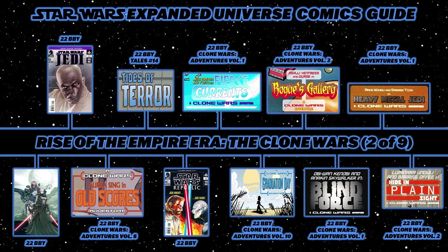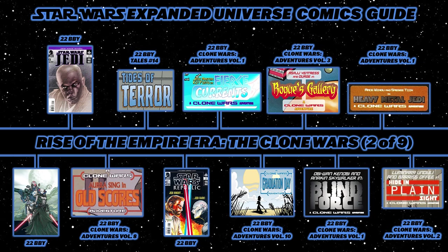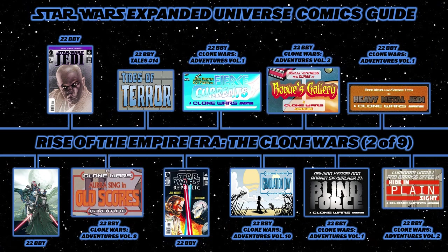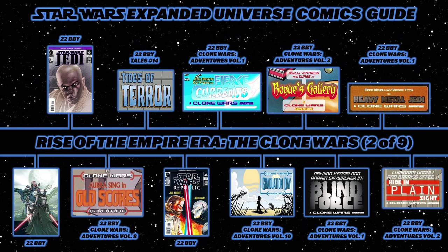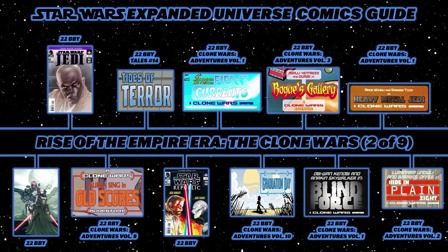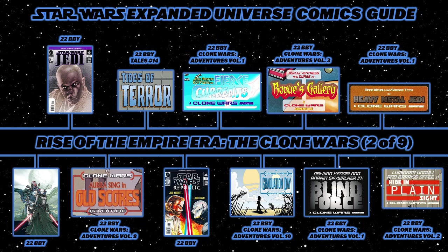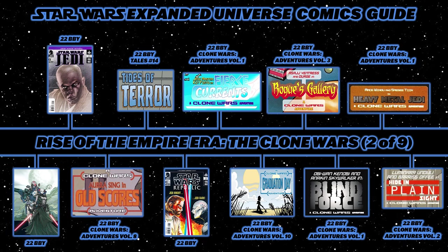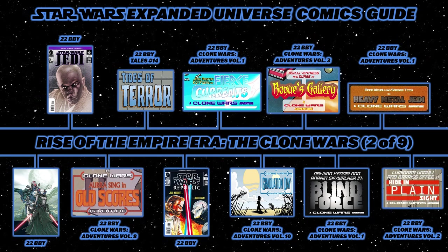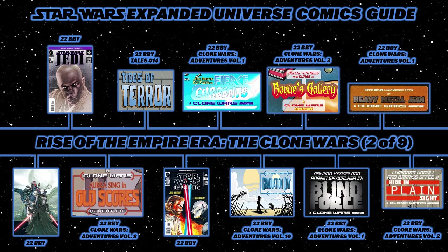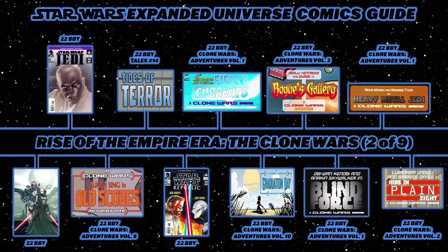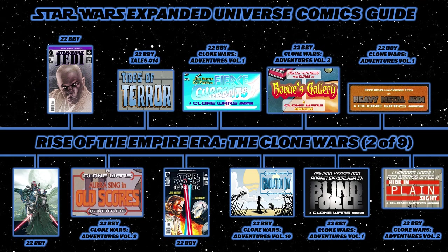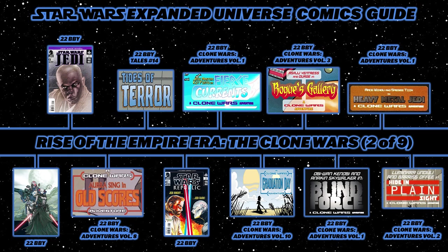They come into conflict with bounty hunter Durge and Sith apprentice Asajj Ventress. Next are the Jedi one-shot issues: Jedi — Mace Windu, seeing Mace on a quest to reunite divided Jedi ranks. Back to Clone Wars Adventures Volume 8 for Old Scores, then Star Wars Tales number 14's Tides of Terror. Republic issue 53 features the singular story Blast Radius, with Obi-Wan teamed with legendary Jedi Masters against Asajj Ventress. Then Clone Wars Adventures Volume 1: Fierce Currents, Volume 10: Graduation Day, Volume 3: Rogue's Gallery, Volume 1: Blind Force, and Volume 1: Heavy Metal Jedi.